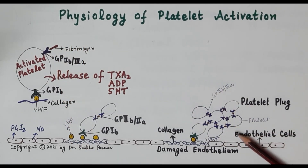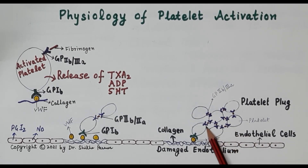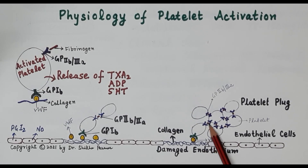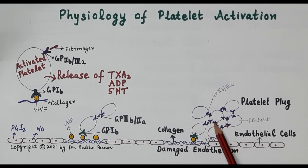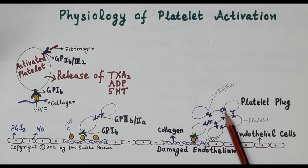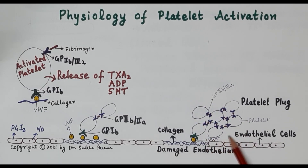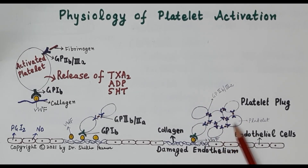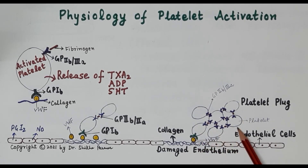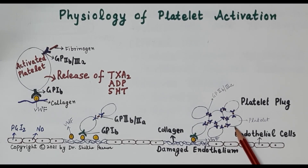As shown in the diagram, the activated platelet's GP2b3a receptor binds to fibrinogen, which in turn binds to another platelet, whose GP2b3a receptor again binds to fibrinogen. This results in cross-linking of platelets — fibrinogen acts as a glue — forming a platelet plug, which is essential for clot formation. A clot formed inside a blood vessel is called a thrombus.